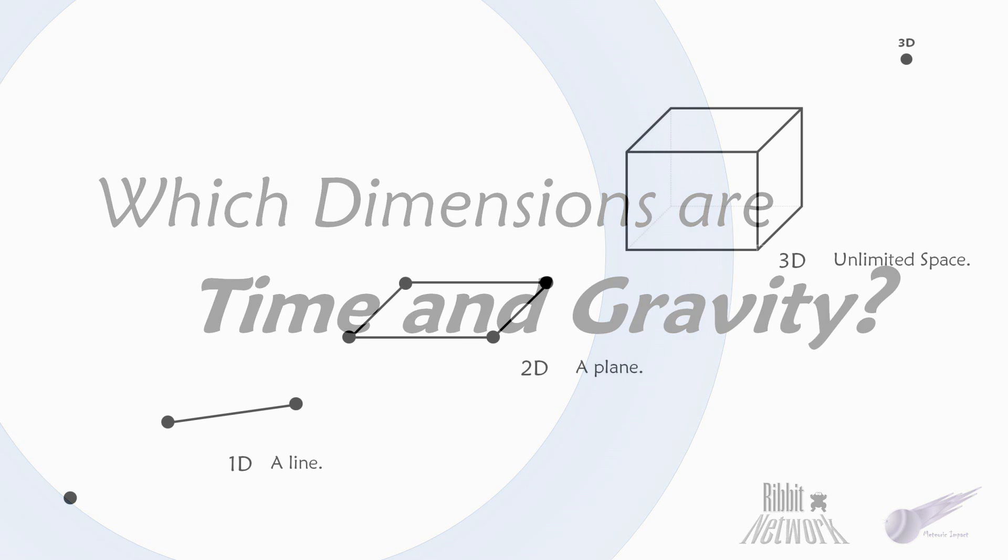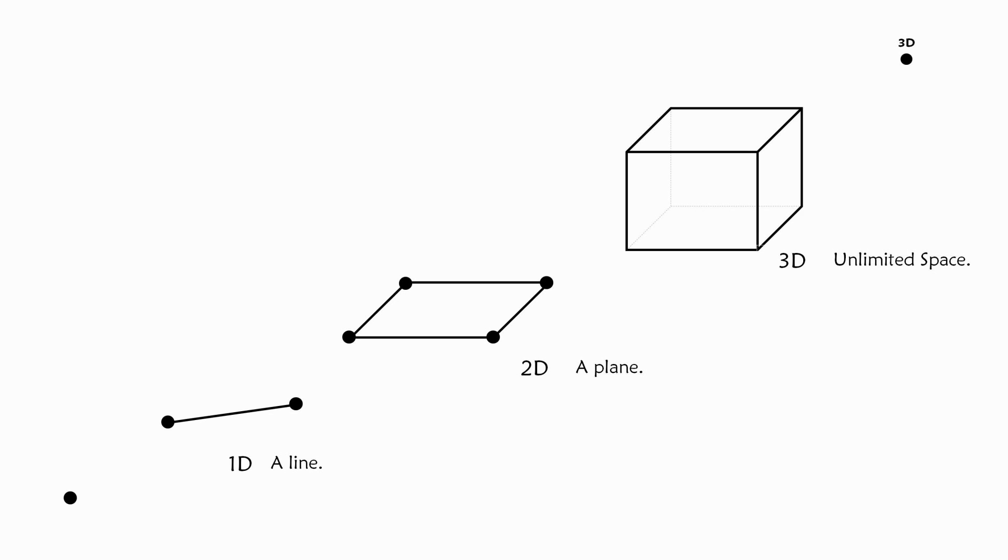In early episodes we started out looking at the first dimension, then the second, and so on, making assumptions about what comes after the third dimension.